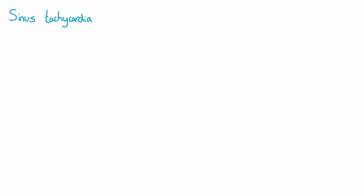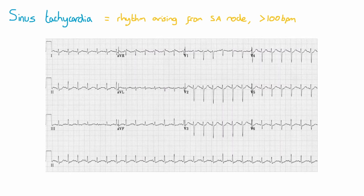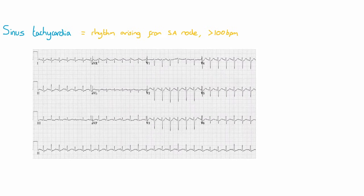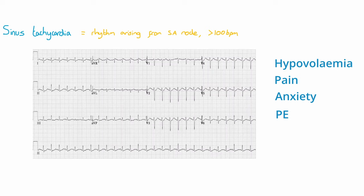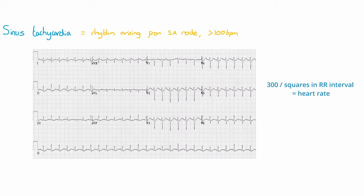Sinus tachycardia, similar to sinus rhythm, is where the rhythm is arising from the sinoatrial node, but the rate is over 100 beats per minute. There are many causes for this, including hypovolemia, pain, anxiety, or a pulmonary embolus. Notice the short RR intervals, which demonstrate tachycardia. If you do the calculation of 300 divided by the number of large squares in the RR interval, you'll get a rate of around 150.